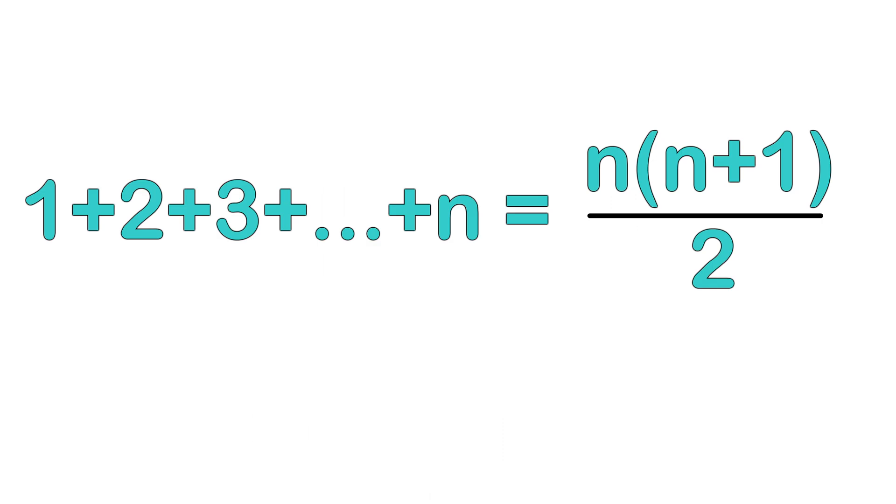The general form of the series is 1 plus 2 plus 3 all the way to n equals n times n plus 1 divided by 2.